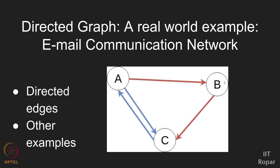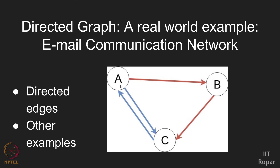Another example from the marketing domain is the supply chain network. The different companies are nodes, and if one company supplies material to another company there is a directed edge. For example, company B is acquiring raw materials from company A, manufacturing products, and supplying those products to company C.